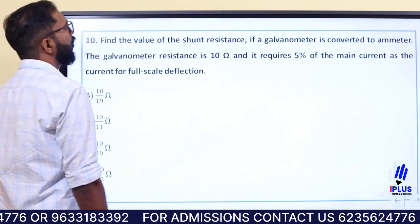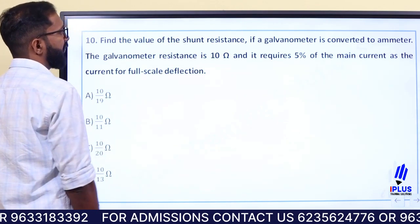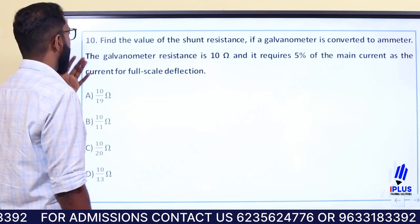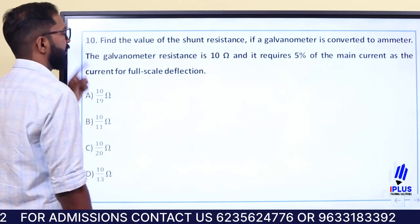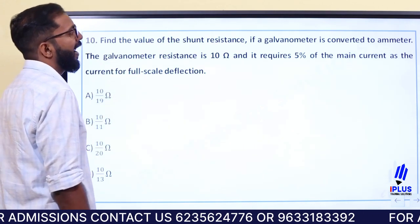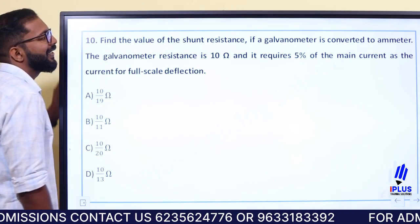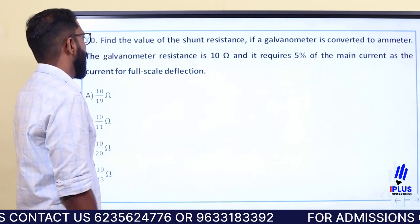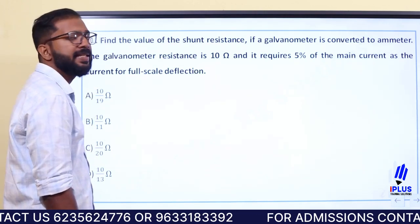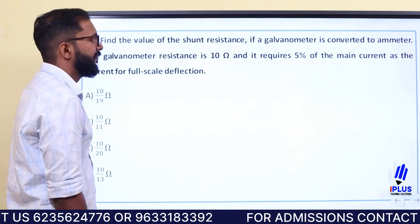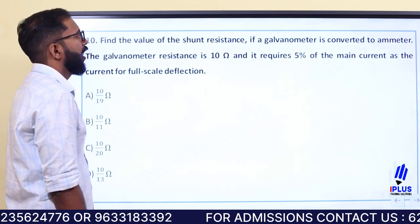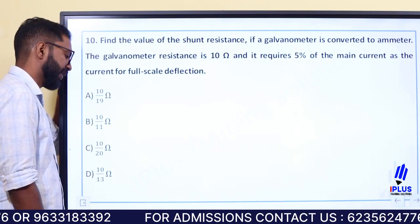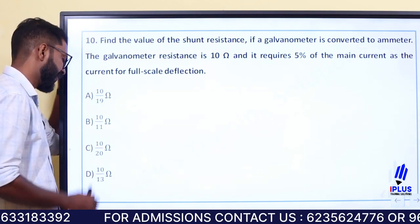Find the value of shunt resistance if a galvanometer is converted to an ammeter. The galvanometer resistance is 10 ohm and it requires 5% of the main current as the current for full scale deflection. Now we need to find the value of shunt resistance.